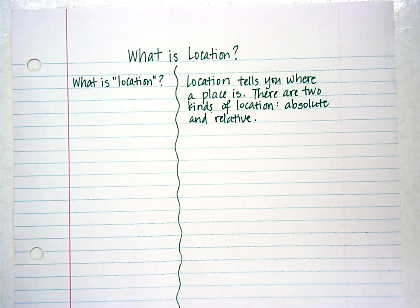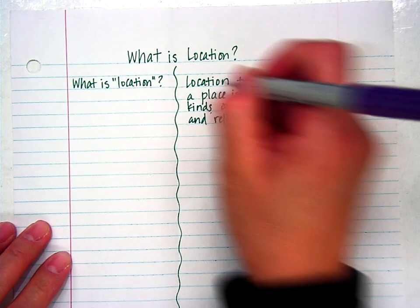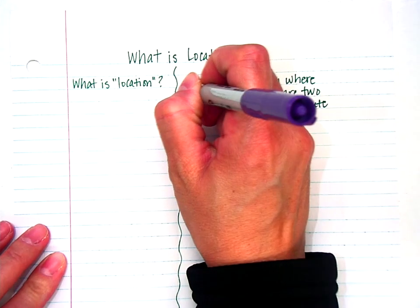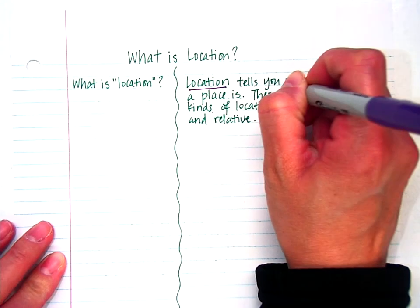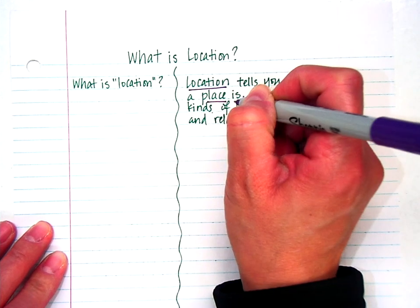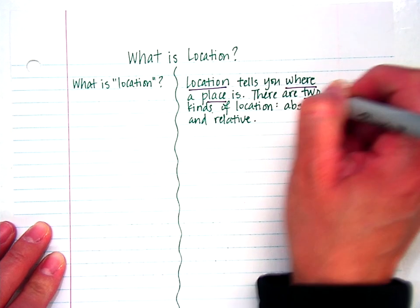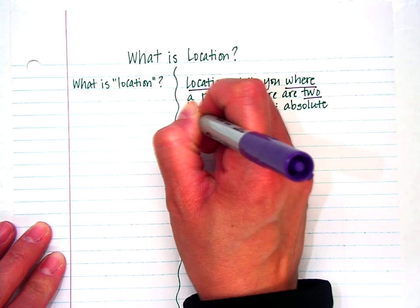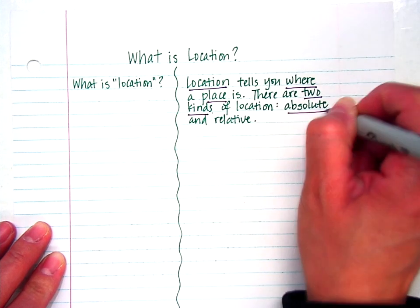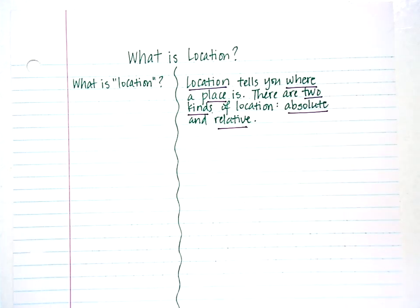Using your highlighter, let's highlight some key words here: location, where, place. And then the fact that there are two kinds: absolute and relative.